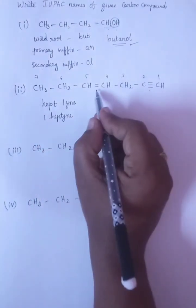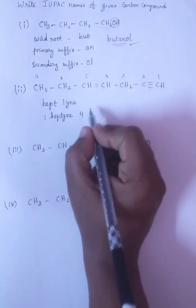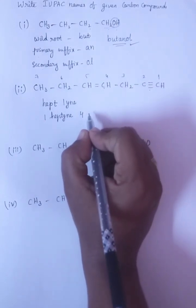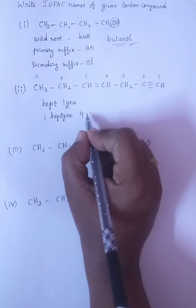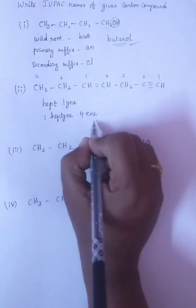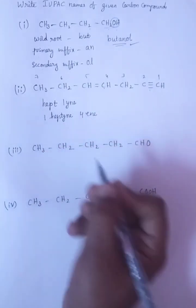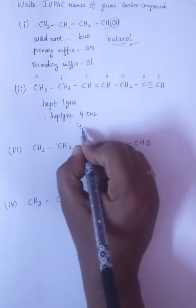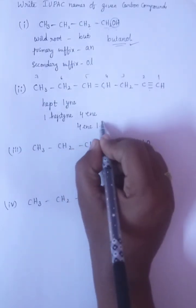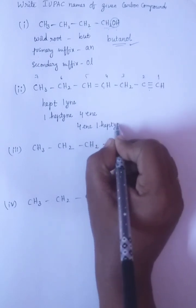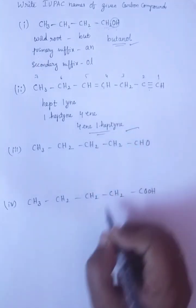When double bond is there, we have to write it as alkene. So IN. We have to choose the alphabetical order. According to that, if you write, then it will be 4-IN, 1-HEPT.